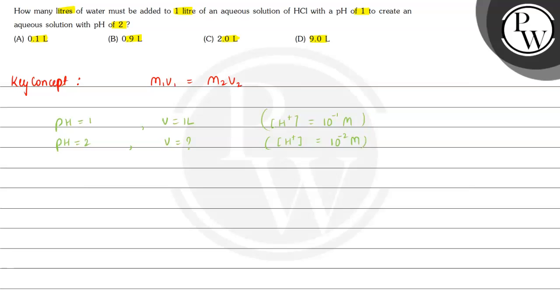That means here M1 is 10 to the power minus 1 and V1 is 1 liter. And M2 is 10 to the power minus 2, and V2 is what we have to find out.